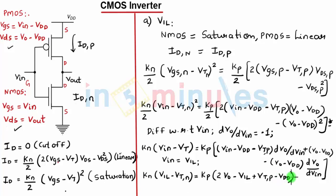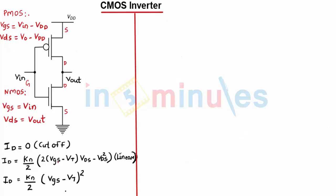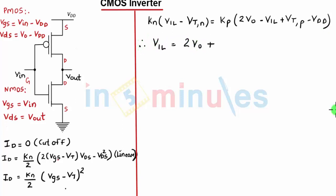On rearranging the terms we will get the value of VIL. On rearranging, I'll get VIL equals twice Vout plus VTP minus VDD plus KR into VTN, this entire thing upon 1 plus KR, where KR is nothing but KN by KP.